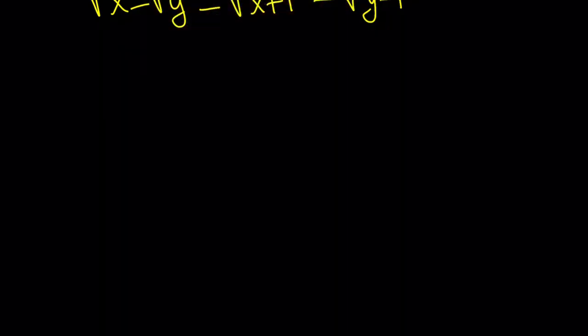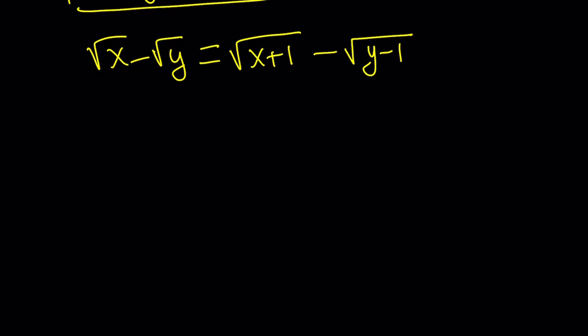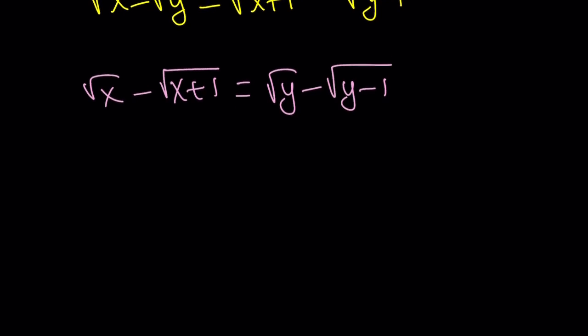One more time, this is our expression: √x - √y = √(x+1) - √(y-1). Let's take a closer look. I'm going to write it in a nicer way, put the x's together because they are good friends, and put the y on the other side. Hopefully this makes more sense.